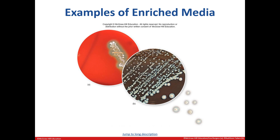In this particular image we can see a couple of examples of enriched media. The left one is a blood agar, which can be used to grow organisms like Streptococcus. The right medium is chocolate agar, which can be utilized to grow Neisseria species.